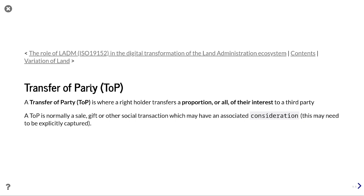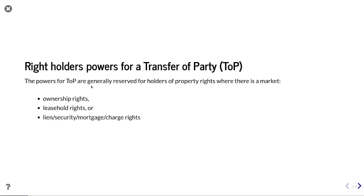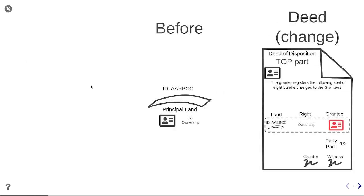Transfer of party is where a right holder transfers a proportion or all of their interest to a third party. TOP is normally a sale, gift, or other social transaction which may have an associated consideration — i.e. value — which may need to be explicitly captured. The powers for TOP are generally reserved for holders of property rights where there's a market: ownership rights, leasehold rights, lien, security, mortgage, and charge rights. For example, an easement cannot be easily transferred individually; it can only transfer as part of the property.